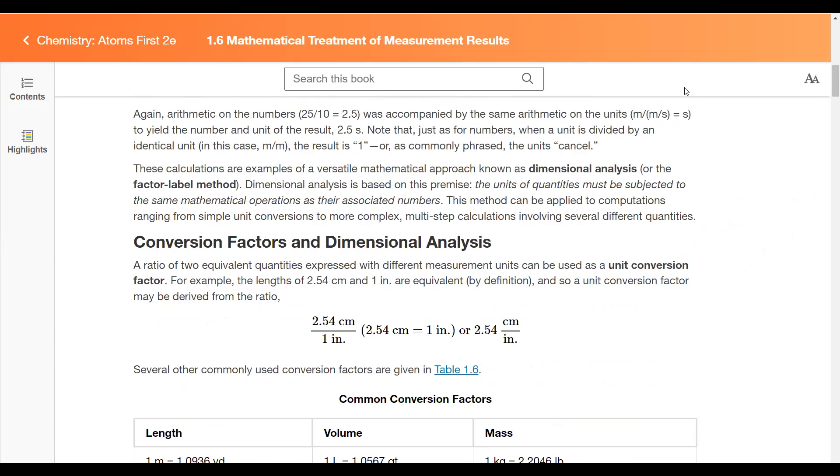This is what's known as dimensional analysis, or the factor label method. This is based on the premise that the units of quantities must be subjected to the same mathematical operations as their associated numbers. We can use this, and will be using this throughout the semester, in more complex multi-step calculations. Specifically, we'll be applying what is called the fence post method.